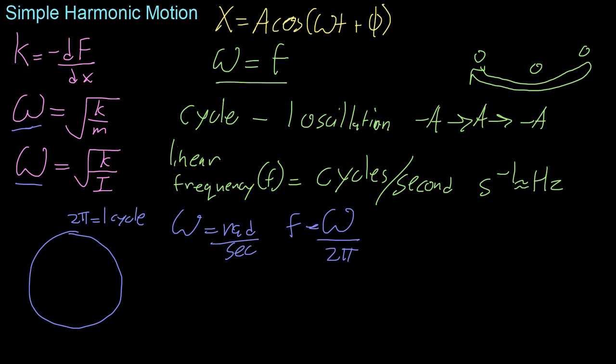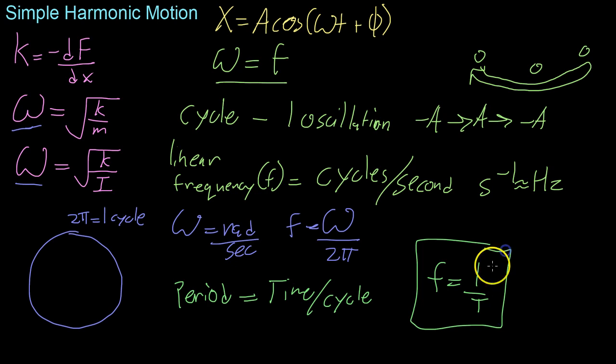Lastly, we already discussed the definition of period and frequency in the last video, but we know that period is the time it takes to go through one cycle. And because this is cycles per unit time and period is time per unit cycle, we know that they're inversely related, or that frequency is 1 over T.